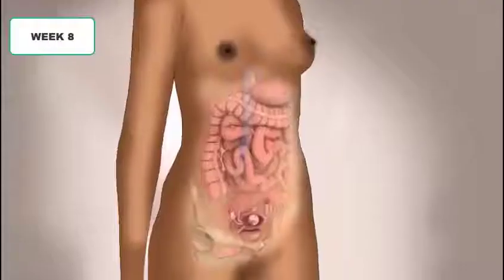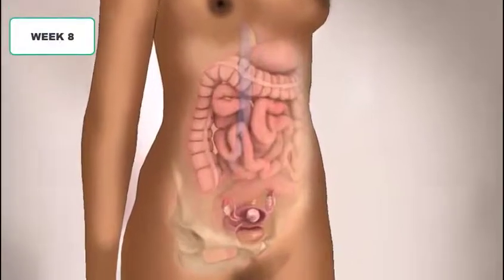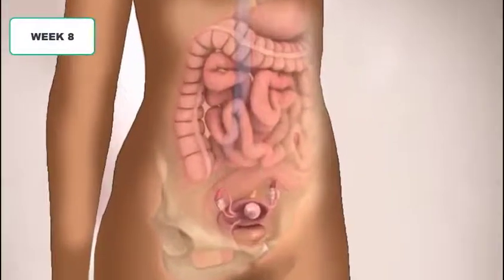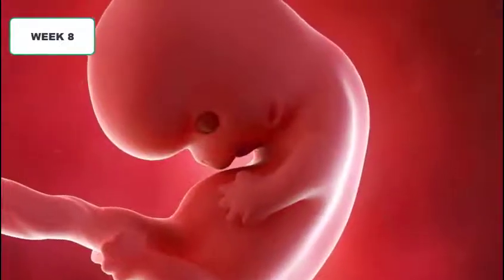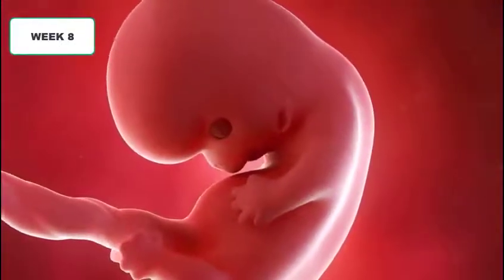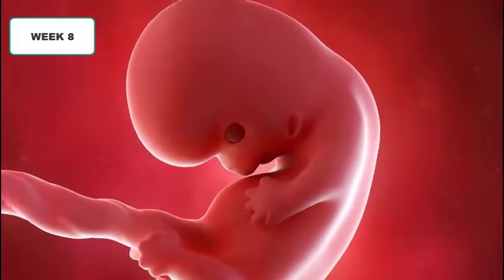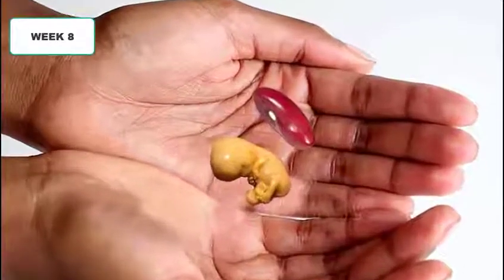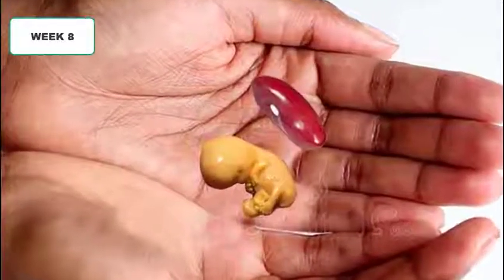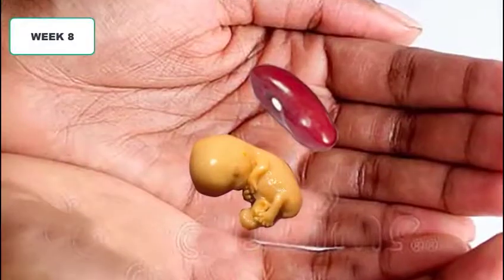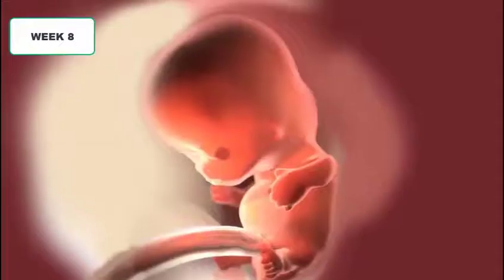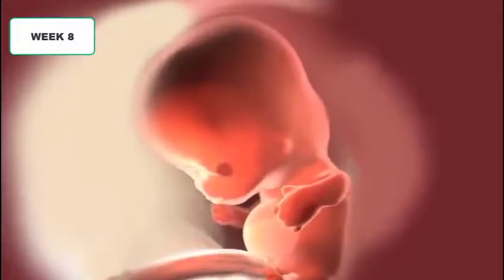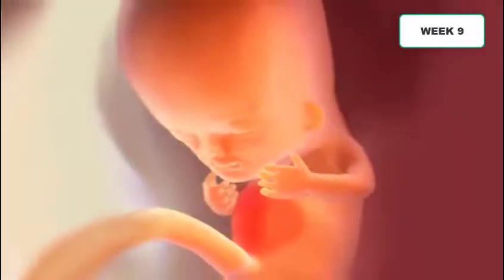At week eight the embryo is still growing and is now four times the size it was two weeks ago — now the size of a green bean. A close look shows clearly differentiated tiny baby eyes, and the nose, ears, and hands are becoming more and more clear. The heart is beating stronger.